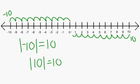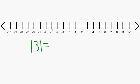For example, absolute value of negative eight would equal eight units to the left. And the absolute value of three would equal three also.